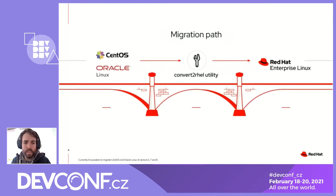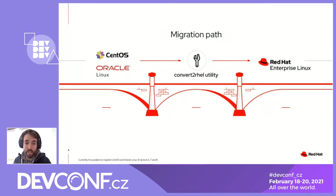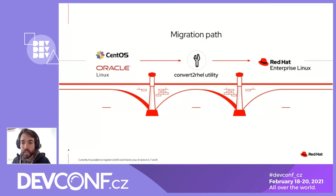This is just a visualization of how it works. You have the CentOS or Oracle Linux system, you use the ConvertRel utility — which we will use today — and you are brought to the Red Hat ecosystem. You get Red Hat Enterprise Linux.